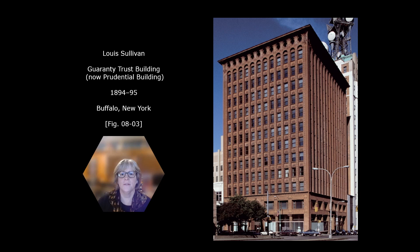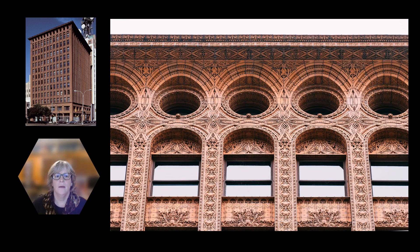This is the Guaranty Trust Building, now called the Prudential Building, built in 1894-95 by Adler and Sullivan, although Louis Sullivan is given more credit. This is an early skyscraper. The building represents a new approach to both structure and decoration. Most modern architects were opposed to the use of ornaments, but Sullivan chose to use them, designing the ornaments himself and placing them between the shafts and on the top floor. They are intricate on every surface. The ornaments were made from terracotta using molds, which was very common at the time.